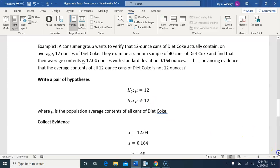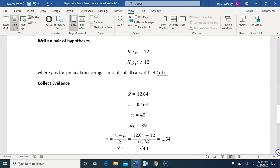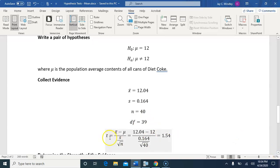So what is our evidence that it's not equal to 12? Well, we have a sample mean of 12.04 with standard deviation 0.164, sample size of 40, degrees of freedom 39. And using our formula from above, we turn all of this into a value of T, 1.54.